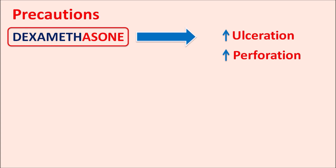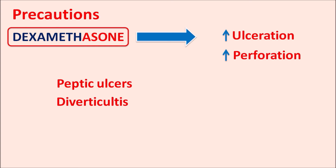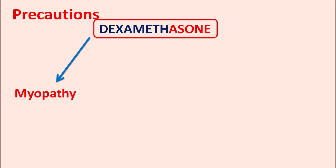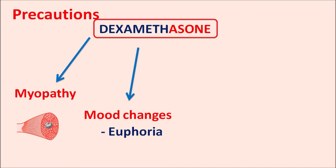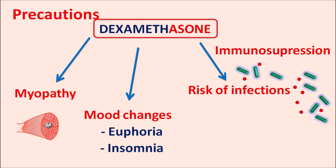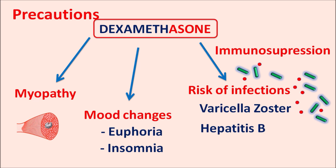This drug can increase the risk of ulceration and perforation. In patients already having peptic ulcers, diverticulitis, inflammation of the colon, or non-specific ulcerative colitis, dexamethasone can further increase ulceration and perforation. It can also produce myopathy leading to muscle pain and muscle weakness, and can produce mood changes in patients resulting in euphoria, hallucinations, and insomnia. Due to immunosuppression, this drug can increase the risk of bacterial, viral, and fungal infections, including varicella zoster, hepatitis B, and fungal infections, particularly at high dose for prolonged periods.